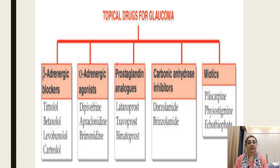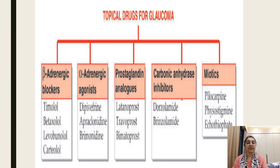The fourth group is carbonic anhydrase inhibitors: dorzolamide and brinzolamide. The fifth group is miotics like pilocarpine and physostigmine. These are the five drug groups for glaucoma.